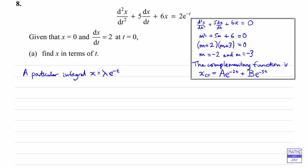So now all we need to do is differentiate that a couple of times, put it into the original equation, and work out what λ is going to be. So let's work out dx/dt. λ is just a constant; when we differentiate e^(−t) we get minus e^(−t), so we're going to get minus λ·e^(−t). Then when we differentiate again to find the second derivative, we multiply the previous answer by negative one, so that's going to give us λ·e^(−t).